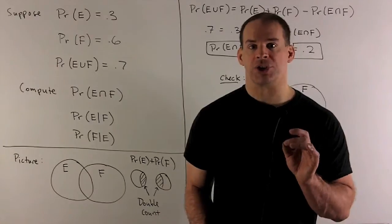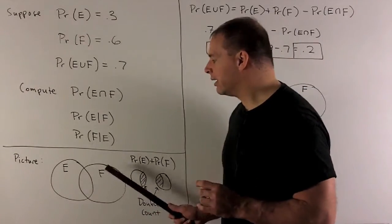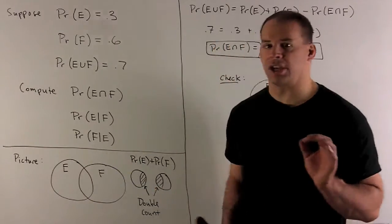Okay, the intersection. Now, we'll draw our picture, so I have E, I have F, and then in the middle we have our intersection.